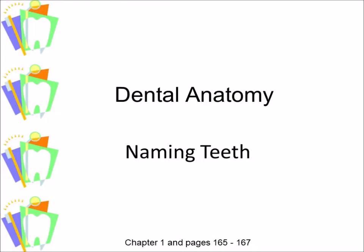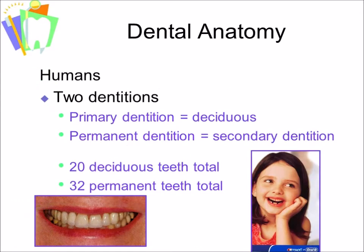This video will talk about the ways we name teeth and our two dentitions. Each set of teeth is referred to as a dentition. Humans have two dentitions, two sets of teeth.